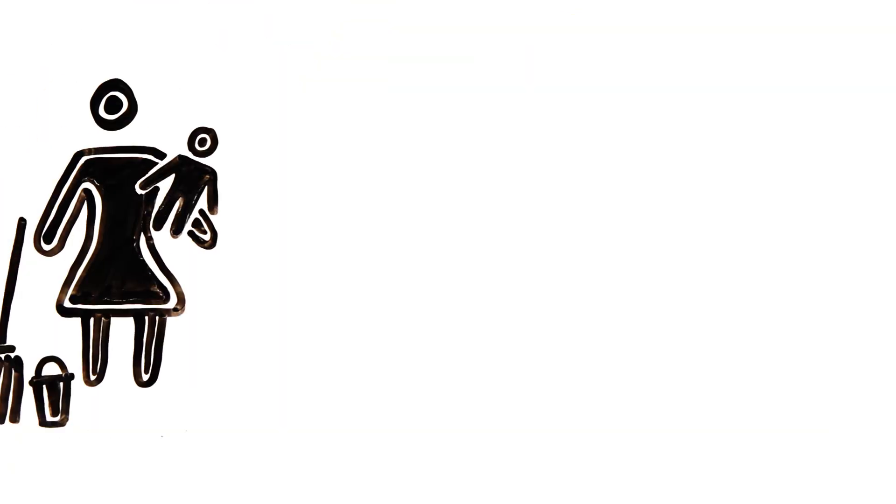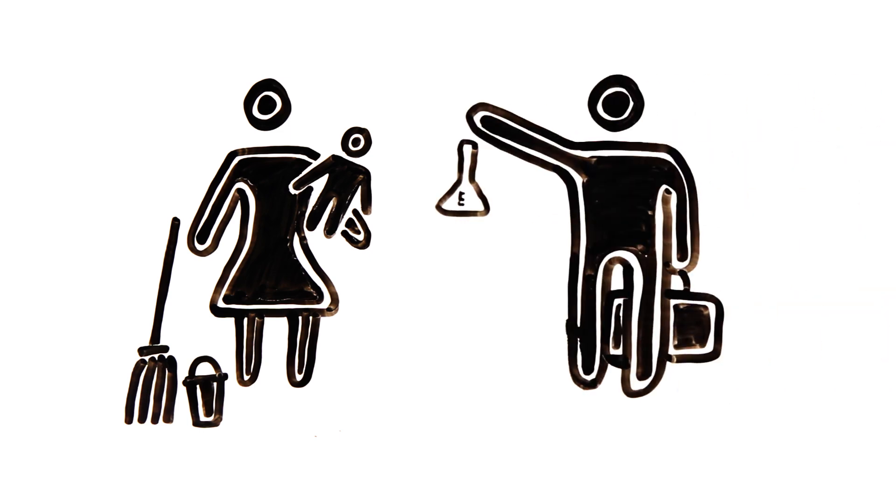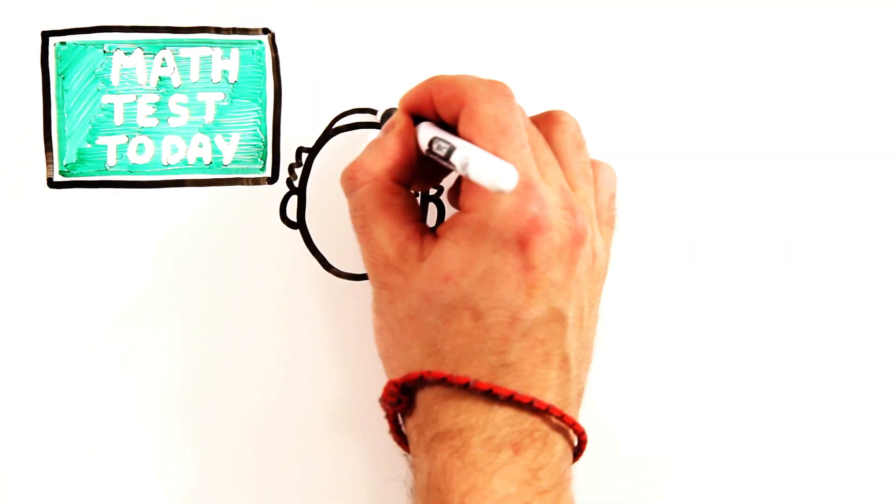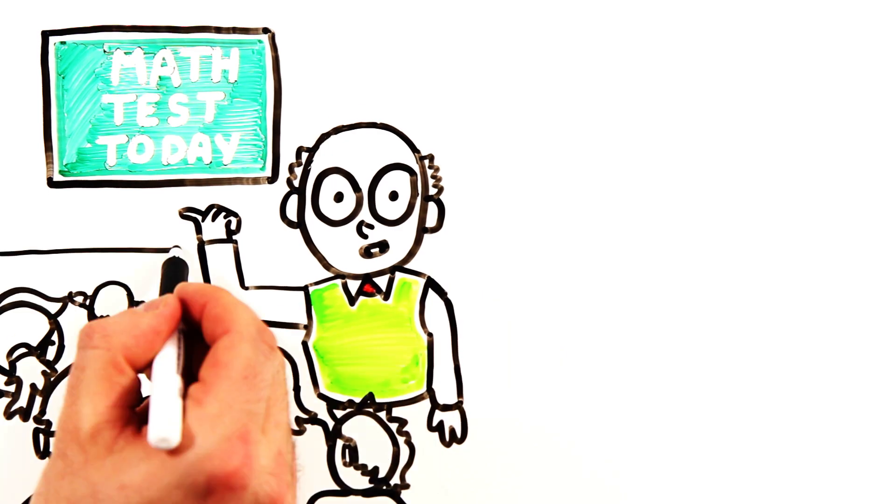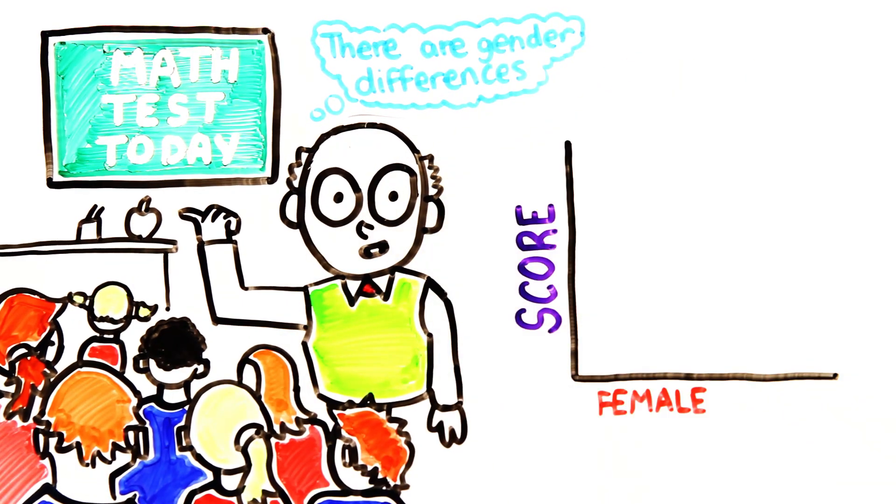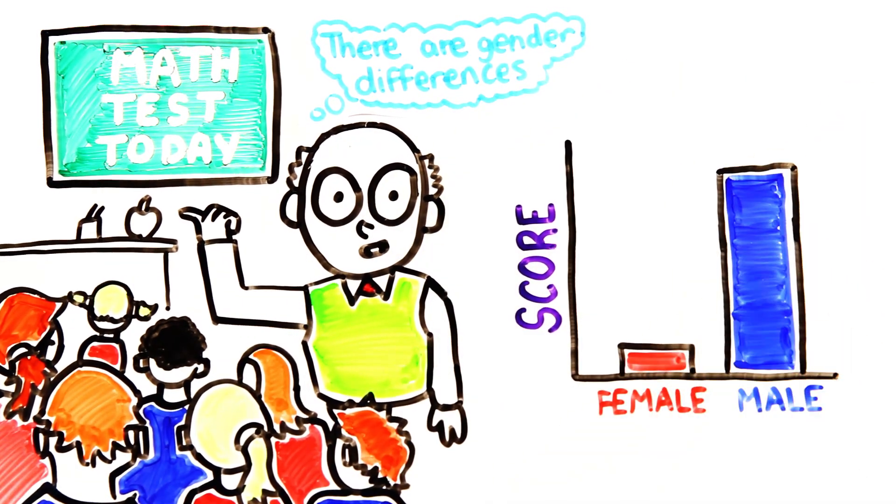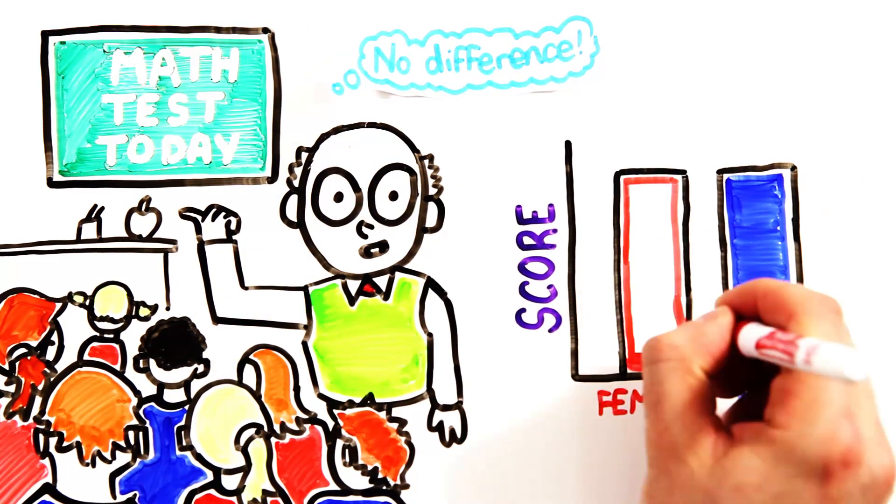But research has found that stereotypes about women's performance actually impact how well they do. When told that a particular math test had significant gender differences, women performed significantly worse than their male peers, while women who were told there was no difference scored the same. This phenomenon is known as the stereotype threat.